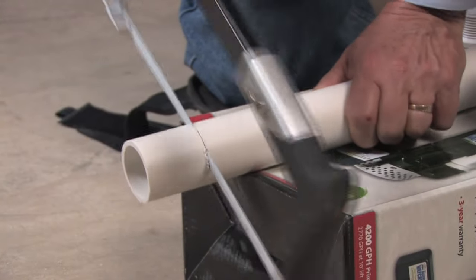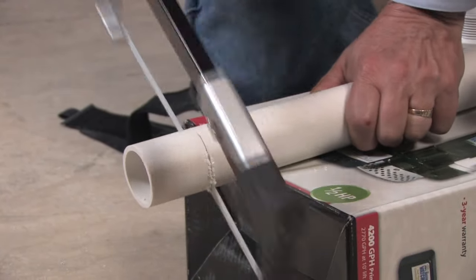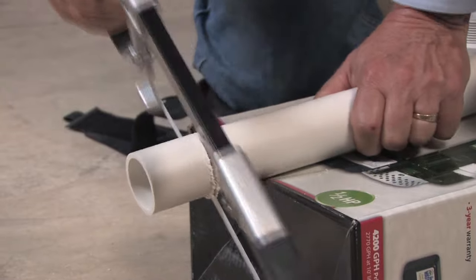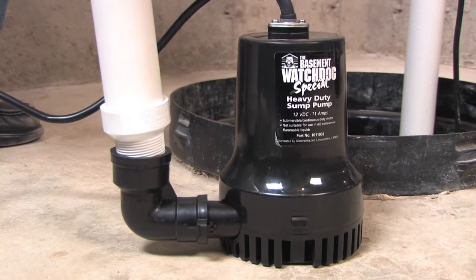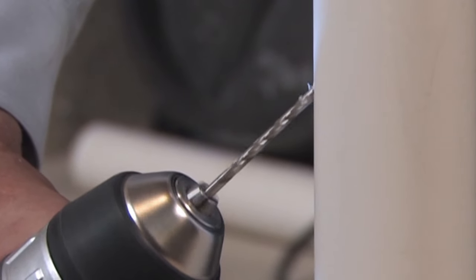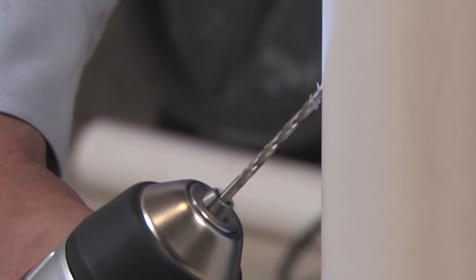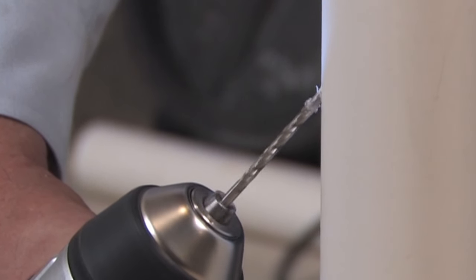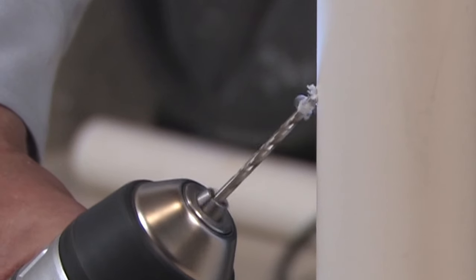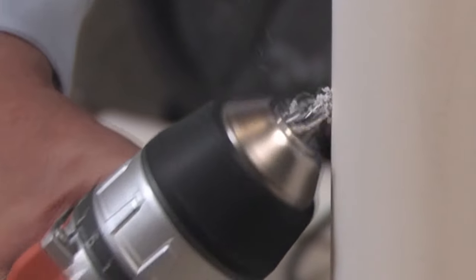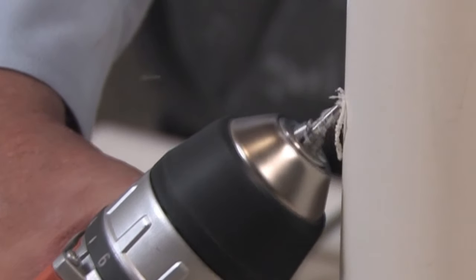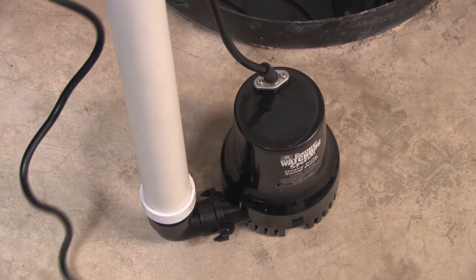Cut a piece of pipe that reaches from the bottom of the sump pit to about one foot above the floor. Glue the adapter onto that pipe and then screw it into the backup pump. Drill a one-eighth inch hole in the pipe above the backup pump at a 45-degree angle toward the bottom of the sump to avoid water splashing outside the sump pit. If this hole is not drilled, an airlock may prevent the pump from working.